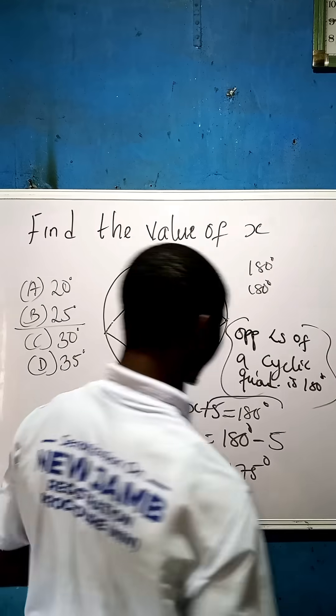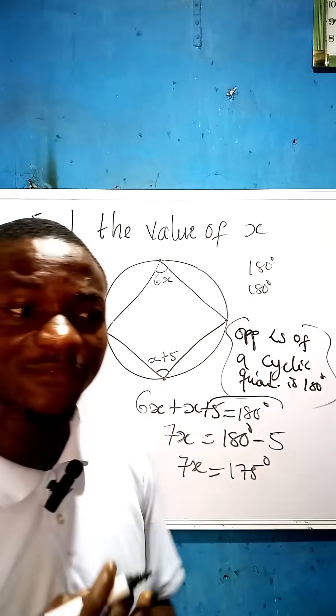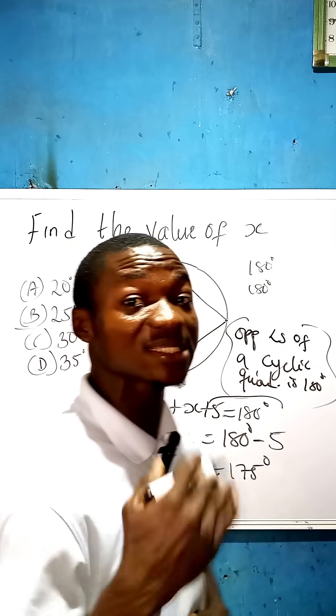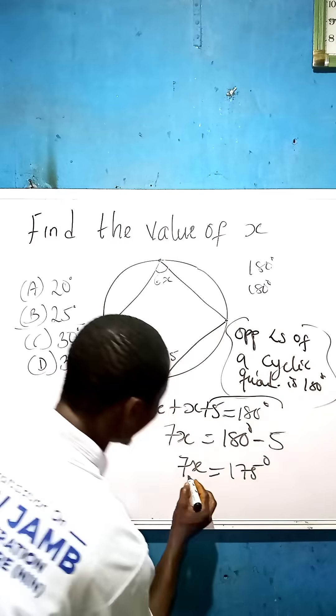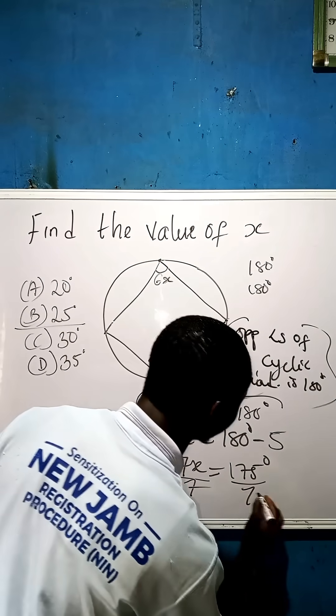We are now having 175 degrees. Since we are looking for x, not 7x, we are going to divide both sides by 7 to get our value for x. We are now dividing by 7, dividing by 7.